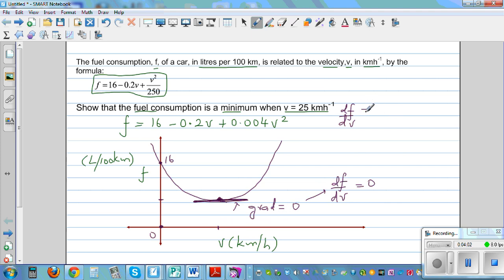So using the polynomial rule, the derivative of 16 is going to be 0. The derivative of negative 0.2V is going to be negative 0.2, and this will be plus 0.008V. So now we have to set this equal to 0.